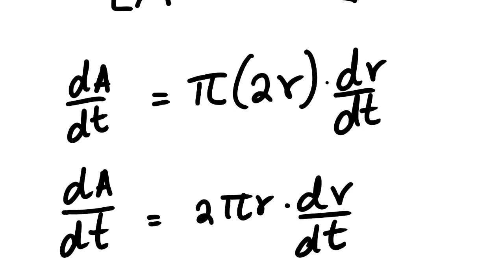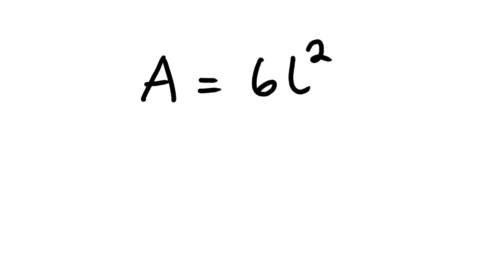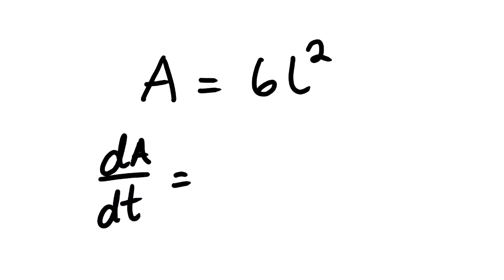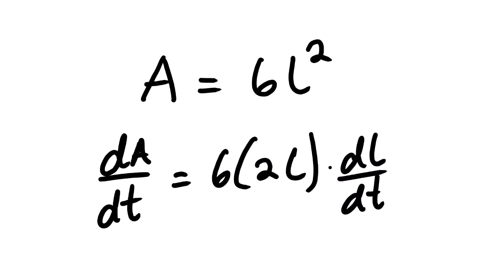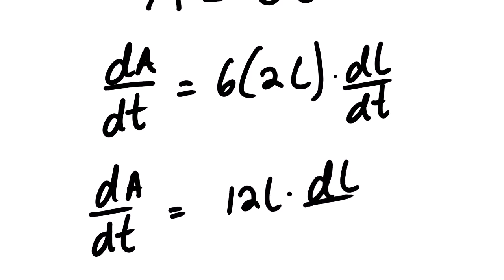This is useful when you are dealing with related rates — the derivative of this equation with respect to t. The derivative of A is 1, so we have dA over dt. 6 is a constant, so we derive L squared. We have 2L multiplied by dL over dt. Simplifying this, we have dA over dt equal to 12L multiplied by dL over dt.